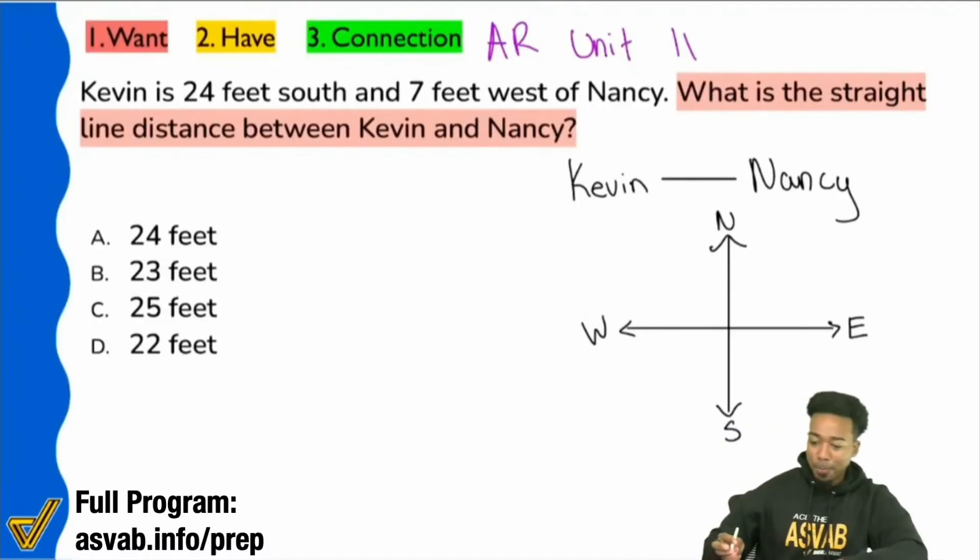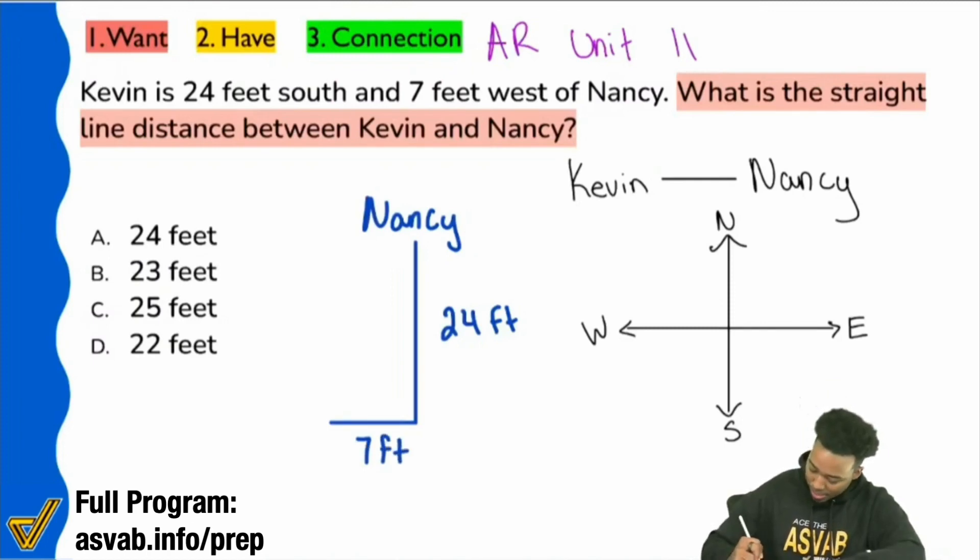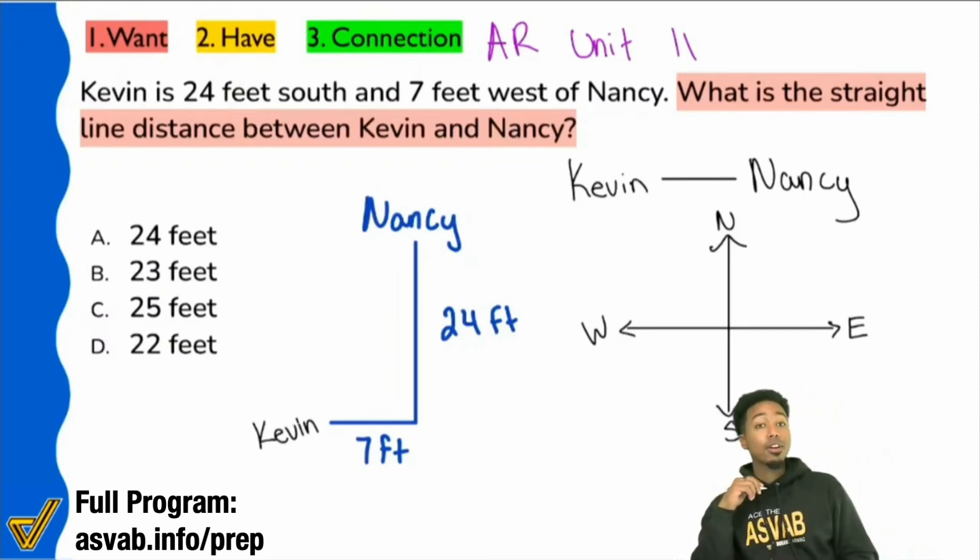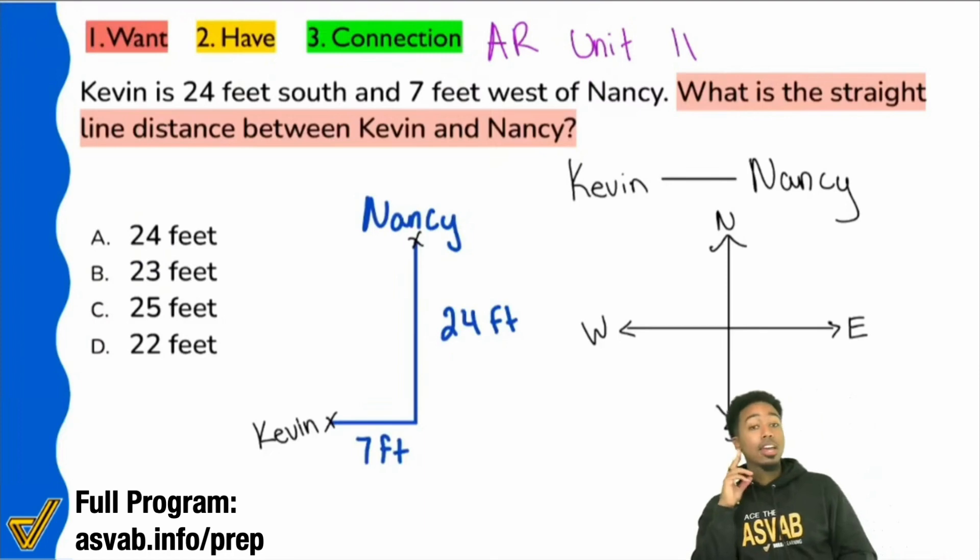Let's get started. So let's say we have Nancy right over here at the top. Let's say we have Nancy. And it says this. So Kevin is 24 feet south and 7 feet west from Nancy. So if we're starting at Nancy, here's what's happening, everybody. We got 24 feet south. And then we have 7 feet west. And then that means this is where Kevin is. Is that fair? Nancy starts here. If you go 24 feet south and 7 feet west, you get to Kevin.